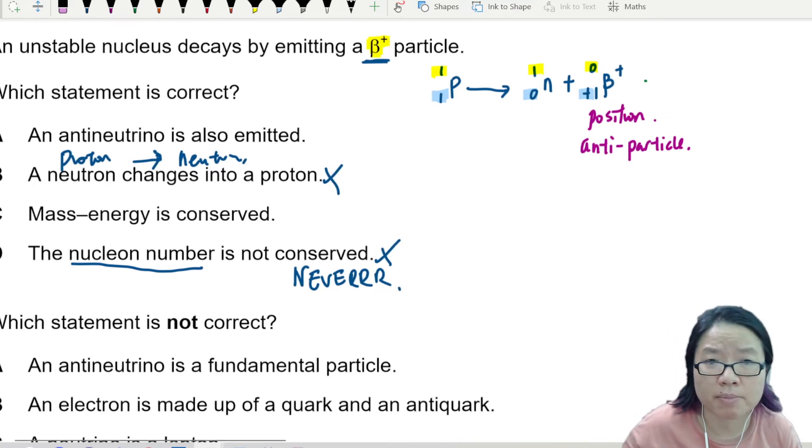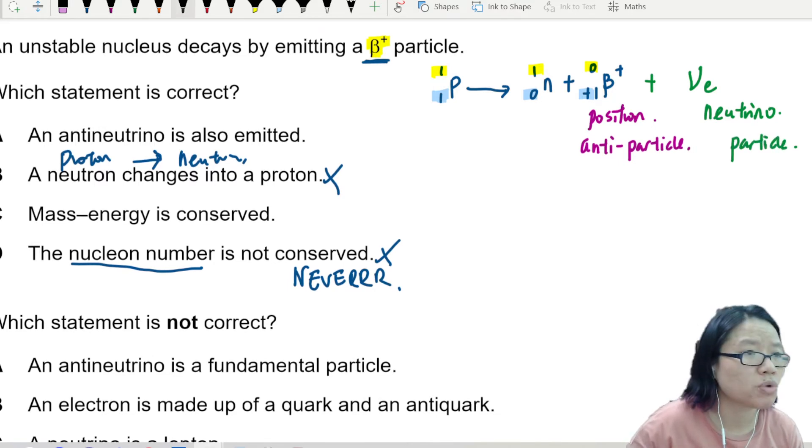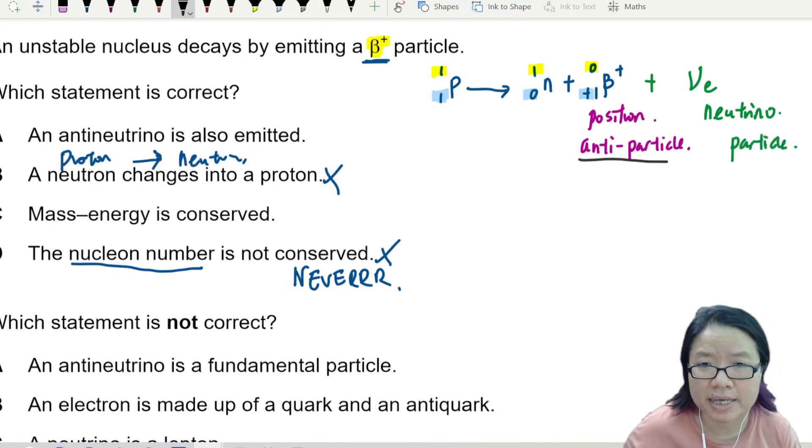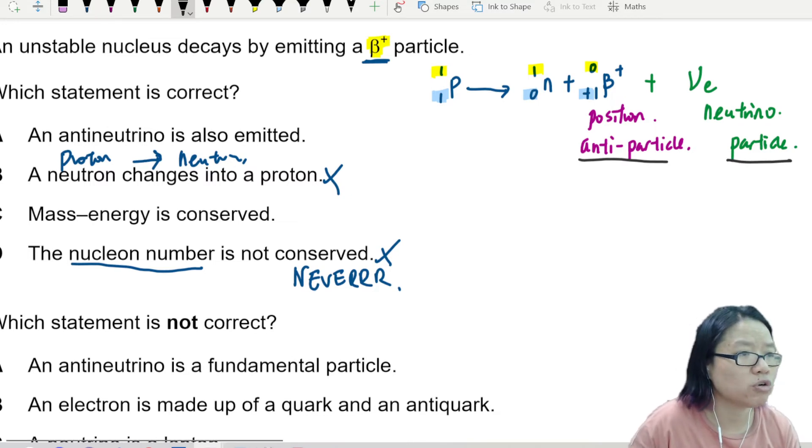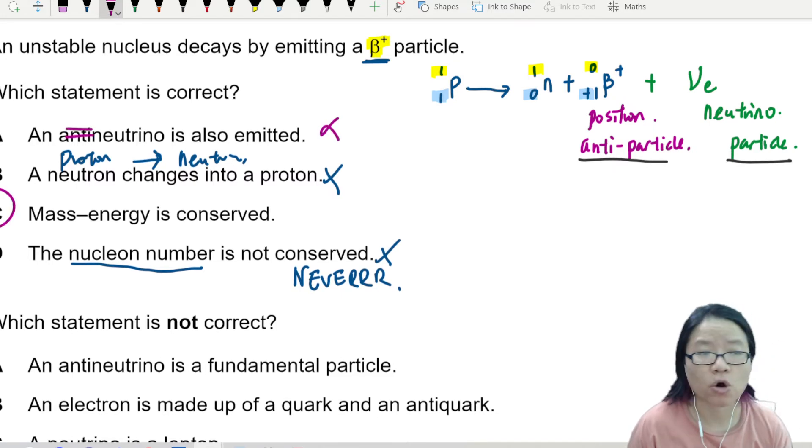Anti-particles have to pair with another particle. So what could be the other particle? The other particle I'm going to pair this with is the neutrino. This is the neutrino, and this one is the particle. So we must pair an anti-particle and a particle. So it's not an anti-neutrino, it should be neutrino instead. Mass-energy is conserved, always correct.